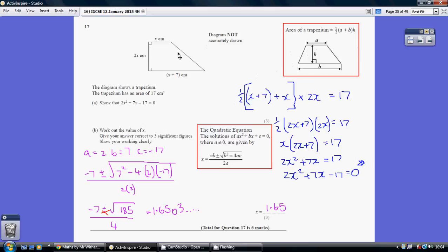Applying that to this question is half of the two parallel sides added together, so the x plus 7 and the x, and then that's multiplied by that perpendicular height, which is 2x, and we're told that that area equals 17.